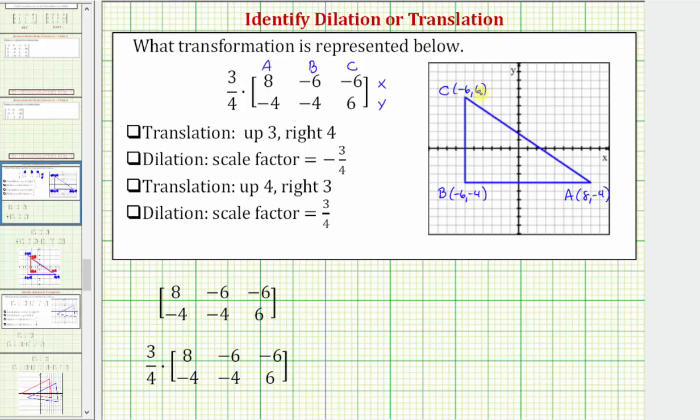So we can think of the x and y-coordinates as directed horizontal and vertical distances from the origin. So if we were to multiply all the coordinates by three-fourths, it's going to shorten those distances and therefore make the triangle smaller by a factor of three-fourths. And that's the reason why this scalar multiplication represents a dilation with a scale factor of three-fourths.